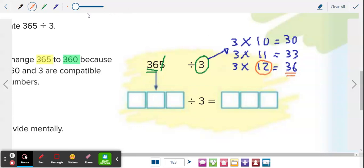So the next step is to change this number. You just copy the 36 36 here. You change the 36 here. You change the number 5 to 0 and you have the new estimated division 360 divided by 3.